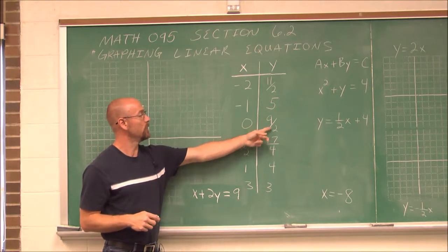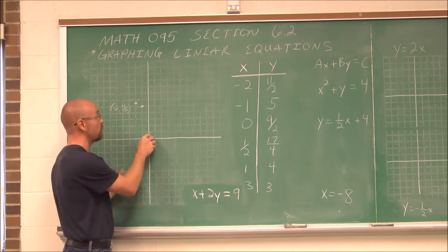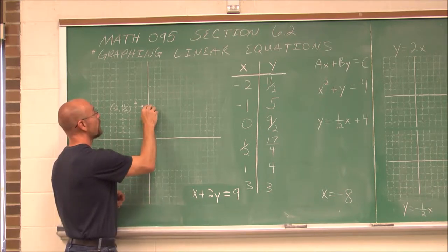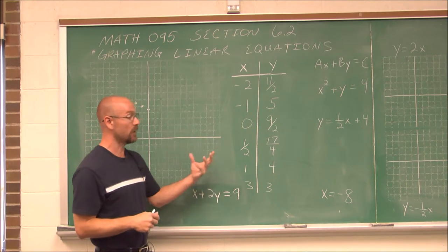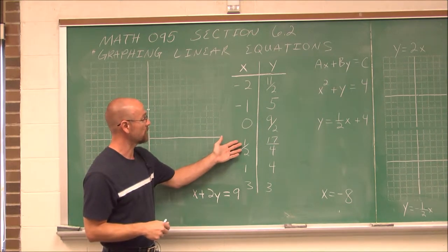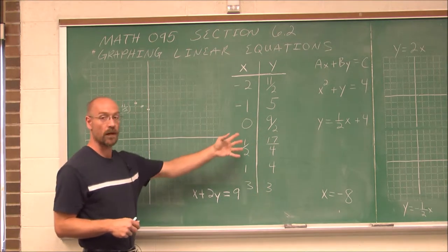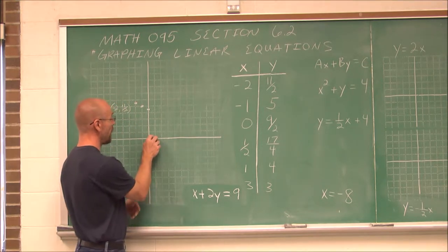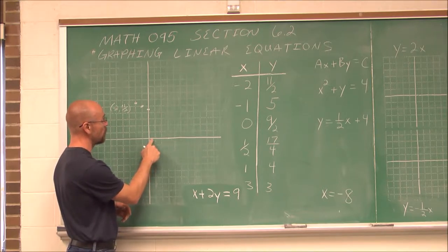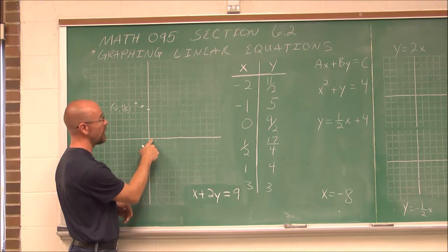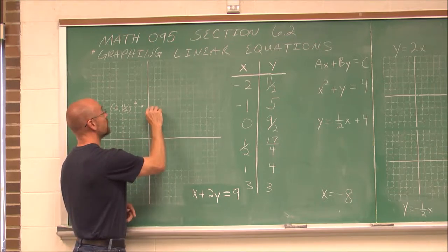The next ordered pair is 0, 9 halves. When x is 0, y is 9 halves, or 4 and 1 half — so we're right on the y-axis and I go up 4 and 1 half. The next point, when x is 1 half — it's not always going to be a nice integer, sometimes it'll be a fraction — y is 17 quarters, or 4 and 1 quarter. So when x is 1 half, I move halfway between the first mark and the y-axis, then up 4 and 1 quarter.